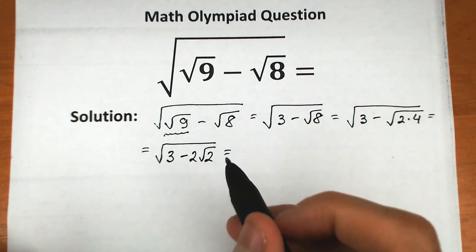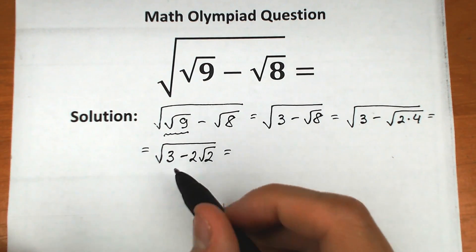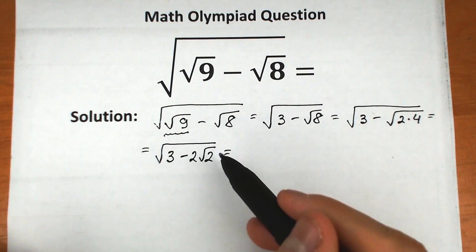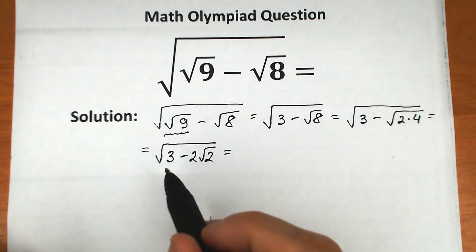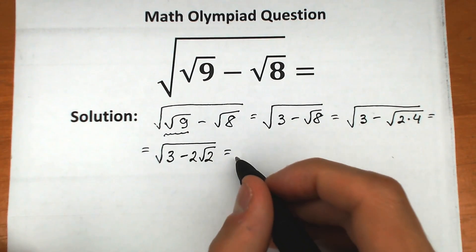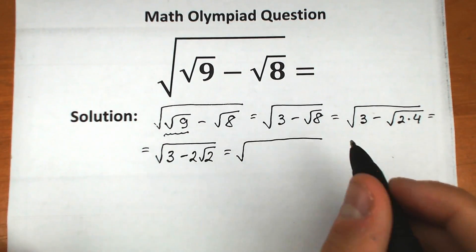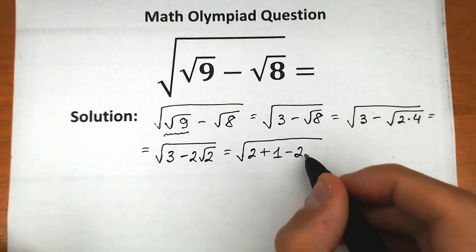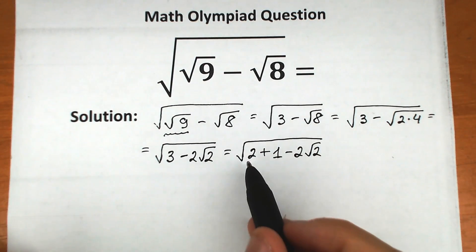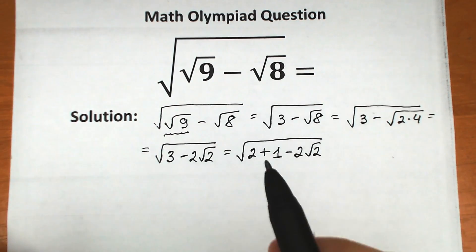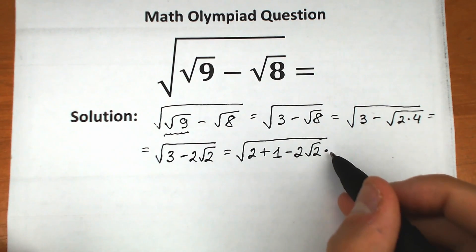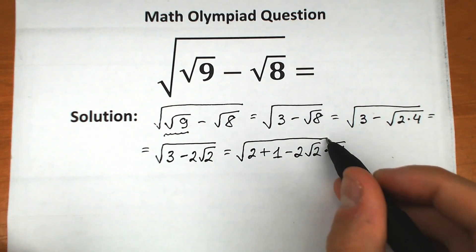What we're going to do next: we need to create a perfect square inside the square root sign, so that we can cancel the square root and the square. Let's write 3 as 2 plus 1. So we have square root of 2 plus 1 minus 2 square root of 2. This changes nothing for us, but let's also multiply the middle term by square root of 1, which also changes nothing.